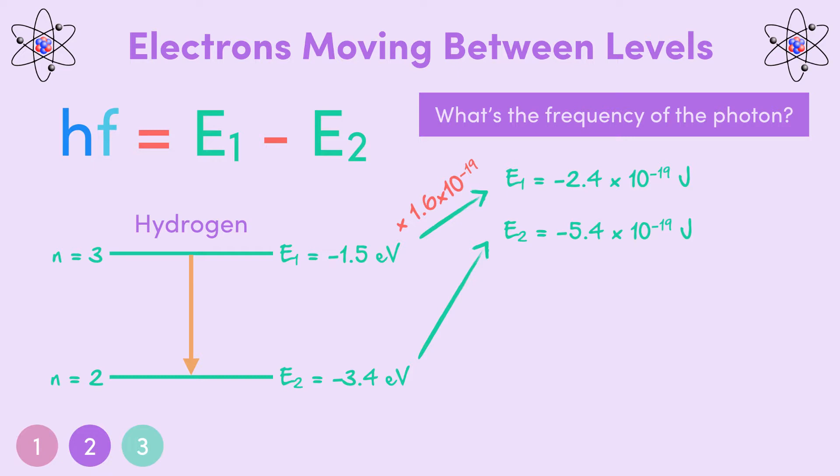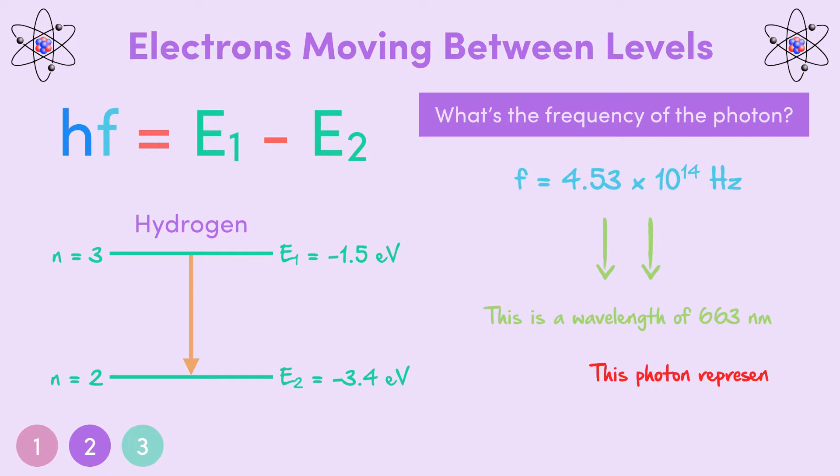So, E1 minus E2 gives us 3 times 10 to the negative 19 joules. This is the energy of the photon released. So, dividing by H gives us the frequency, 4.53 times 10 to the 14 hertz. Note that this corresponds to a wavelength of 663 nanometers, which means the photon represents red light.